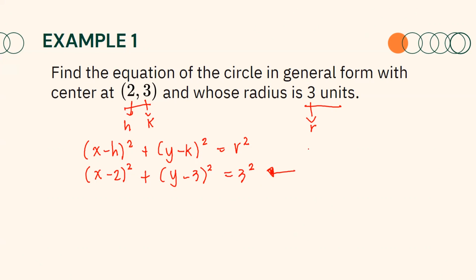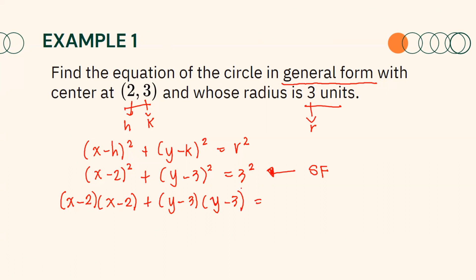Notice that this is already our equation in standard form. However, we were asked to write the equation in general form. To do that, we need to expand the expressions (X minus 2) squared and (Y minus 3) squared. Remember that squared means multiplying by itself, so you will have (X minus 2) times (X minus 2). Simplifying, 3 squared means 3 times 3, which gives you 9.